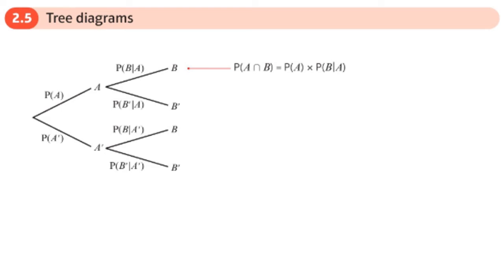This is the last section of the conditional probability chapter: tree diagrams. All we're doing here is applying conditional probability to tree diagrams.